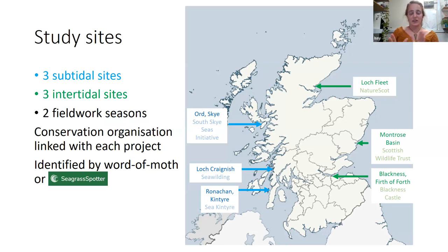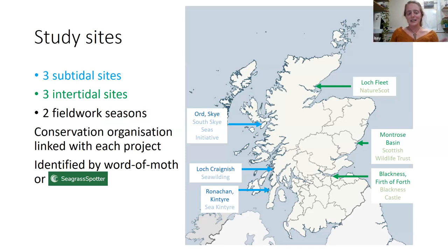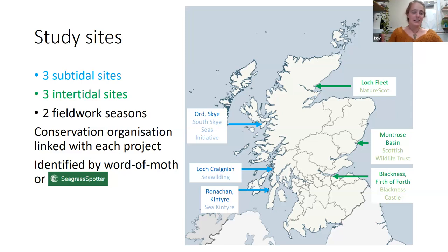This is an overview of my study sites. I have six study sites across Scotland that I visited in 2022, and then this summer I've got three subtidal sites — meadows which are always underwater — and three intertidal sites which are exposed at low tide. The subtidal ones happen to be on the west coast and the intertidal ones on the east coast, mostly a result of the geography of Scotland. Each location is linked with some kind of organization — a community group, conservation organization, or historical organization.